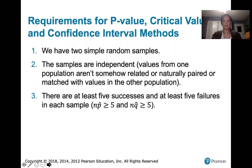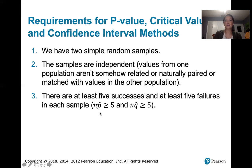If we've got a simple random sample and the samples are independent from each other, and there are at least five successes and at least five failures in each sample — represented symbolically as n times p-hat being greater than or equal to five and n times q-hat being greater than or equal to five — because n times p-hat is the number of successes in a sample and n times q-hat is the number of failures in a sample.